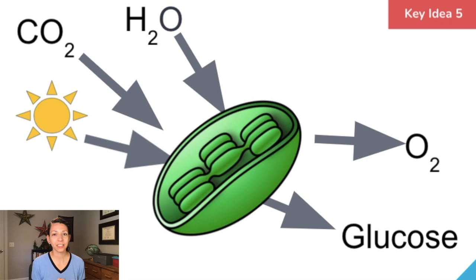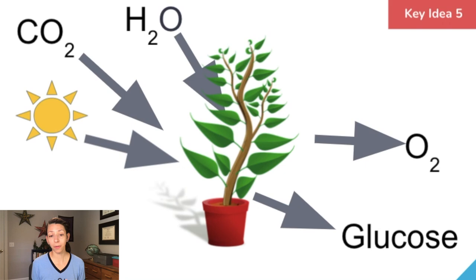Photosynthesis provides the connection between the sun's energy and the energy needs of all living systems on earth. The inputs of photosynthesis are sunlight energy, carbon dioxide, and water, and the outputs — or products — are glucose and oxygen. Plants perform photosynthesis in their chloroplasts, and some single-cellular organisms do as well.